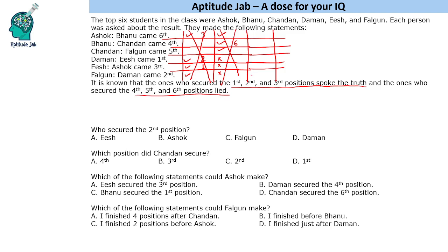If we take Fagun as a truth teller, Daman becomes a truth teller, and then Ish also becomes a truth teller. Similarly, if we take Daman, Ish automatically becomes a truth teller. This means we cannot have 2 of them as truth tellers, because the third automatically becomes one too, giving us 4 truth tellers — which is against the condition that there are only 3 truth tellers.